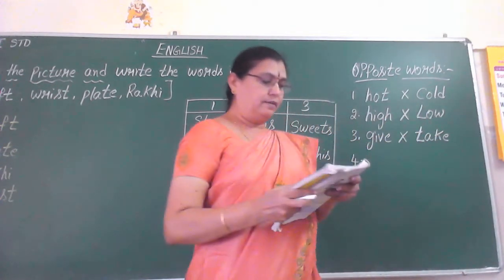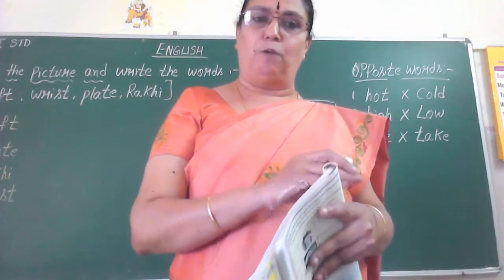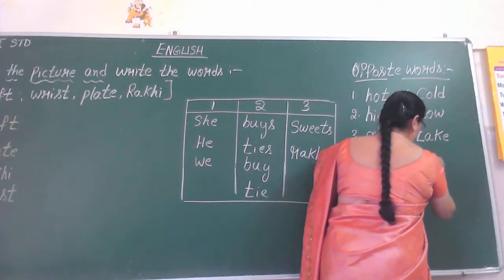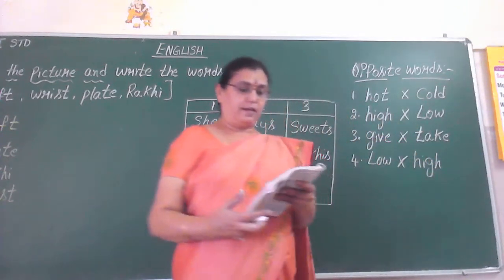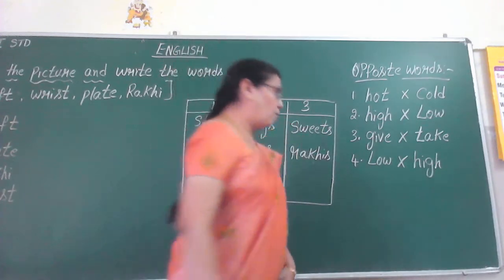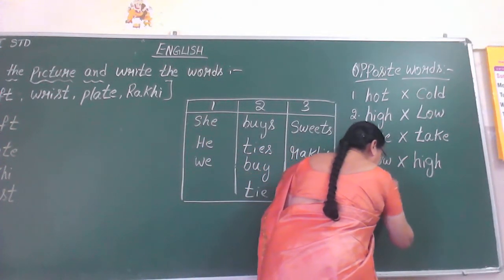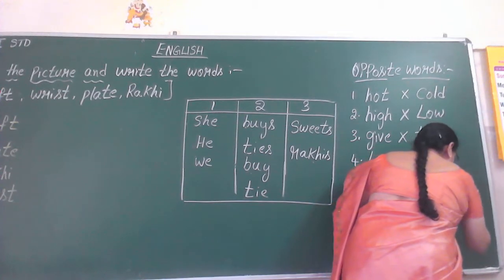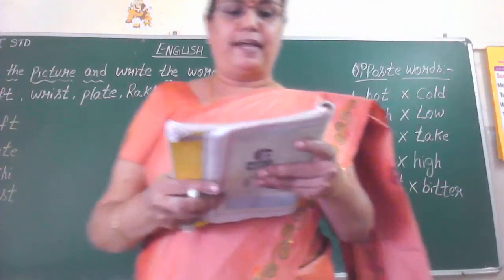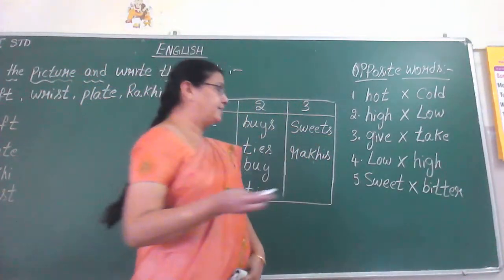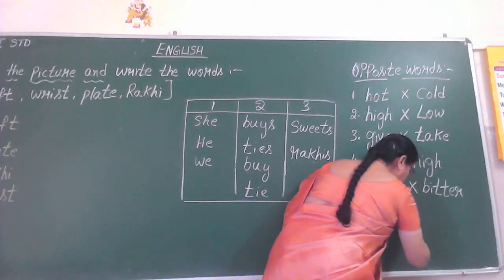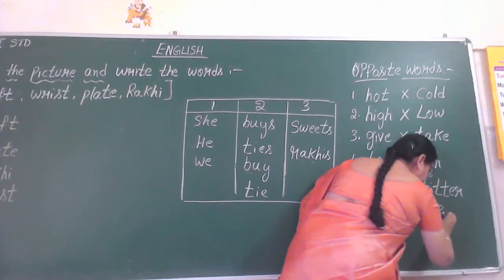Next, the fourth one: high and low — again they have given low. The opposite of low is high — H-I-G-H. Sweet — the opposite of sweet is bitter. Sweet, B-I-T-T-E-R, we are bitter. Last one: take and give — give and take. One more: take and give — opposite. Sit and stand, up and down — like that, these are the opposite words.